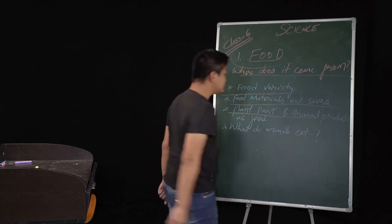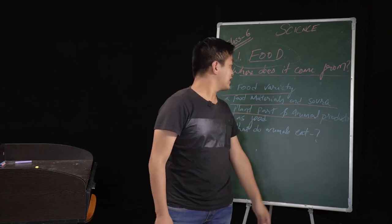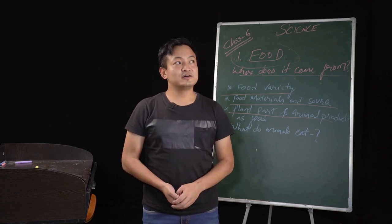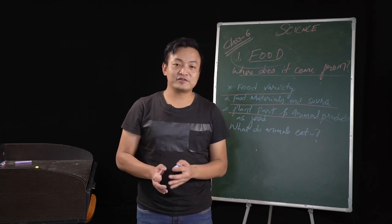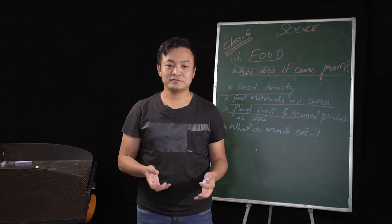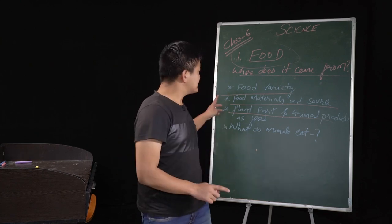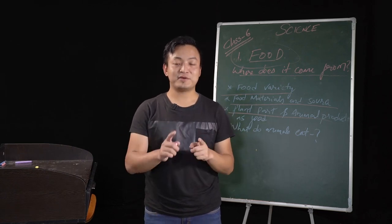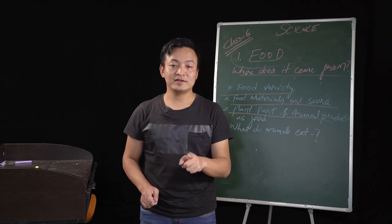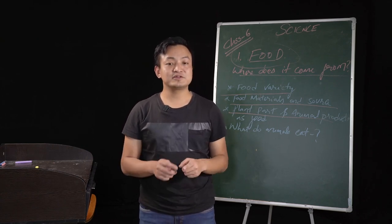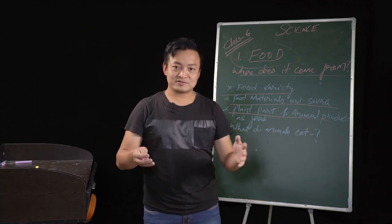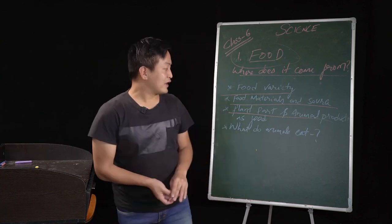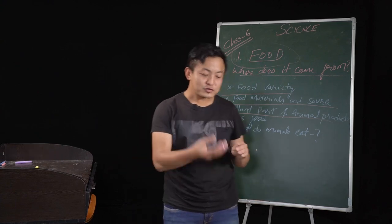Plant part and animal product as food. Which part of the plant do you take for food? In this third topic, the key word I want you to note down is edible — E-D-I-B-L-E. That means which can be eaten. There are many plants around us, but not all plants are edible. Some may be poisonous. So now let's discuss about the plant parts which we eat.